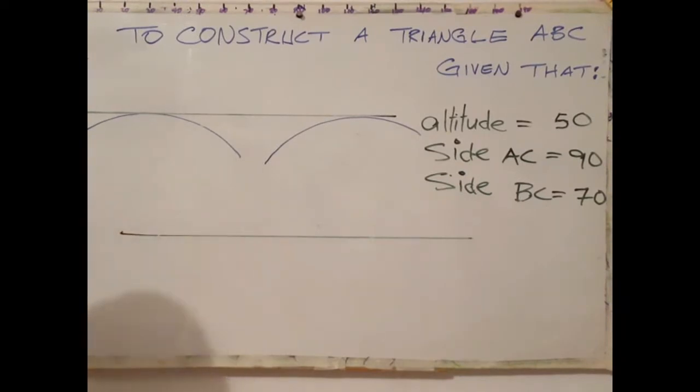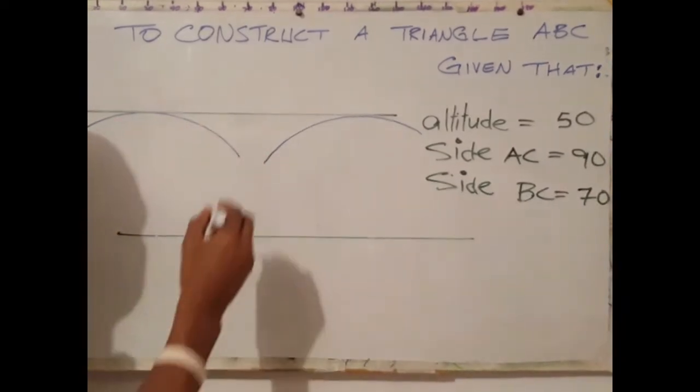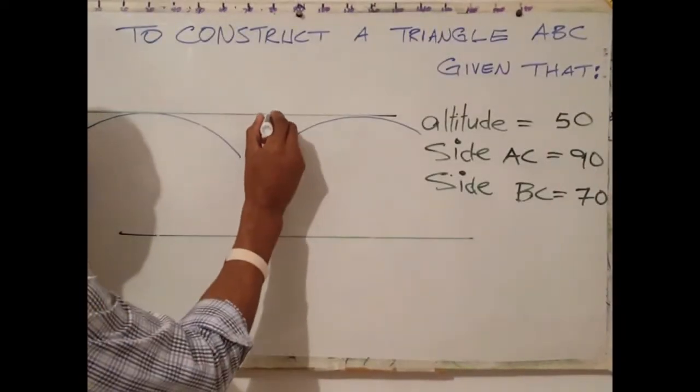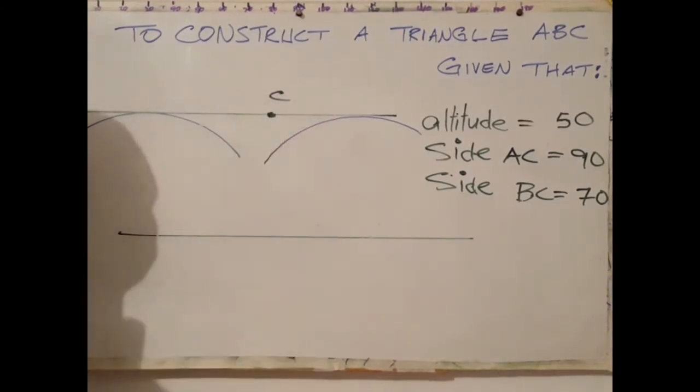The next step is to identify where we want point C to be on this line. We'll use this point here as our point C.